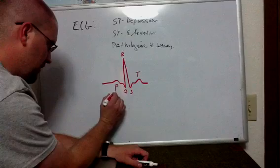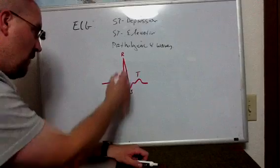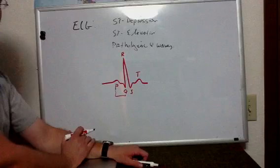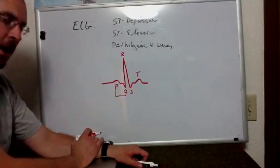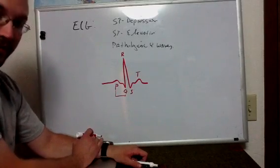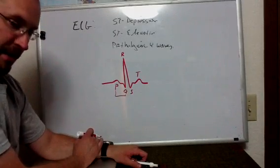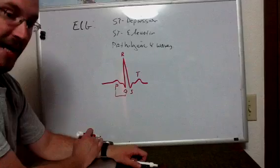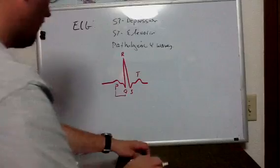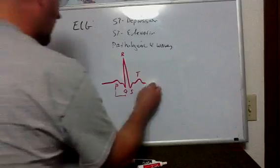We also have a couple of intervals. You have your PR interval, which is the interval from the beginning of the P wave to the beginning of the QRS wave. You want a little pause after your P wave because the impulse is stalled slightly at the AV node — that allows time for the atria to contract and fill the ventricles, or preload the ventricles. This ties into Frank-Starling's mechanism of contraction and preloading the ventricles and how important that is for cardiac output. This is normally what your QRS complex — your PQRST complex — should look like.